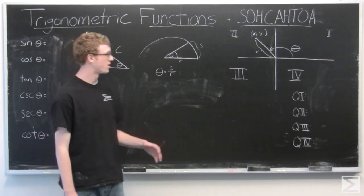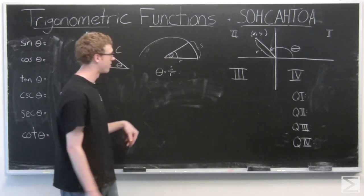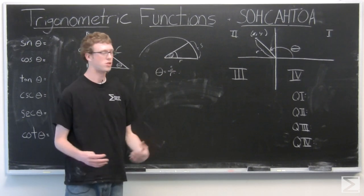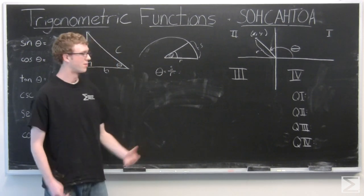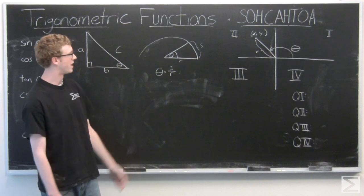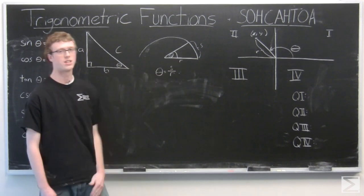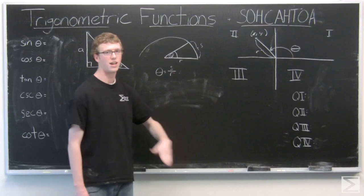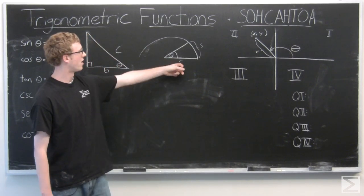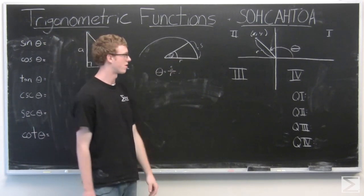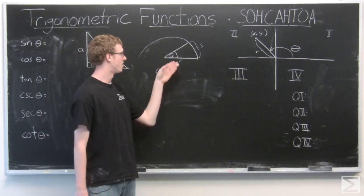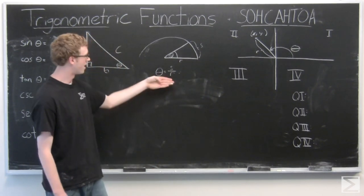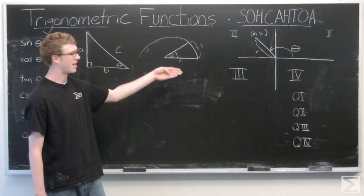Before we start, please ignore all the writing on the board around me and consider this half circle. It's supposed to be a full circle, but we only have room for half. We have an angle in this half circle theta, the arc length that theta cuts out, and r, the radius of the circle. We define theta in relation to that arc length and radius: theta equals s over r.